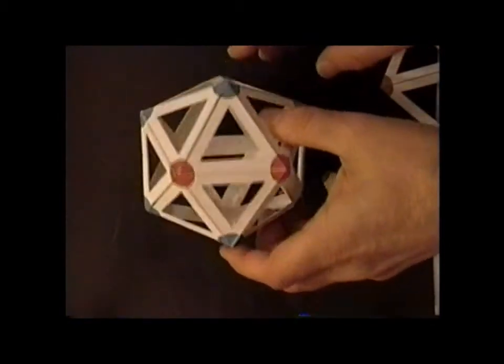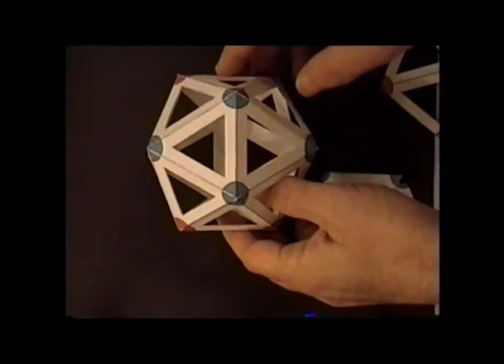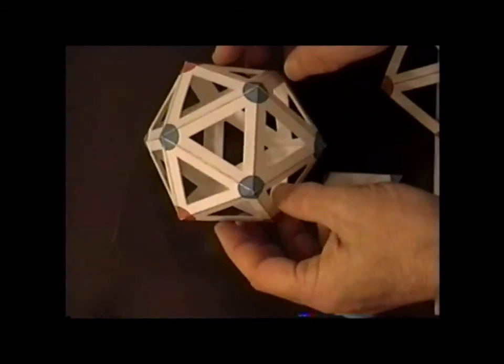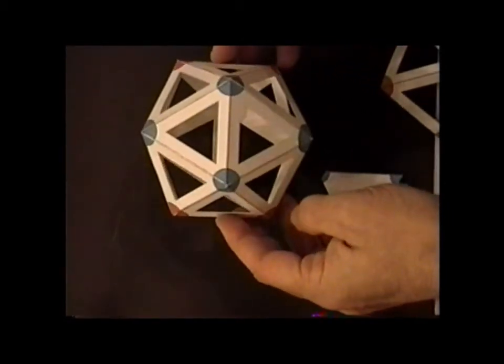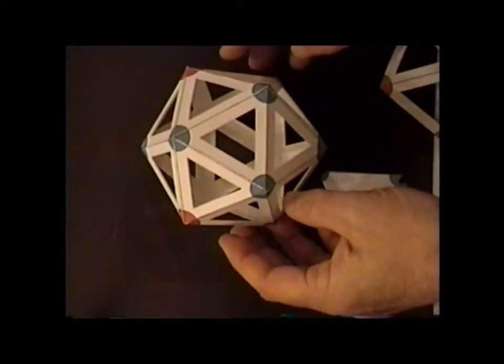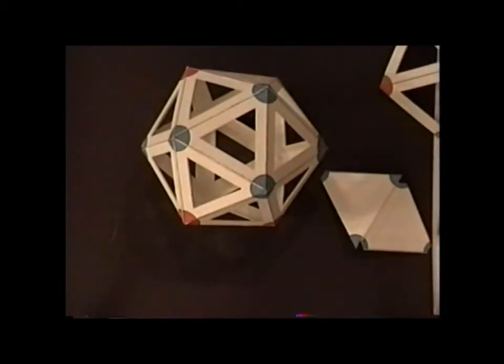Now this reduces the symmetry down to the group D2H. So we can see that we have an example of the point group D2H using just this substitution pattern.